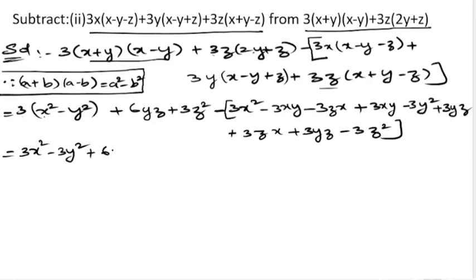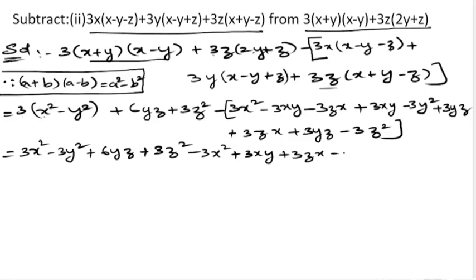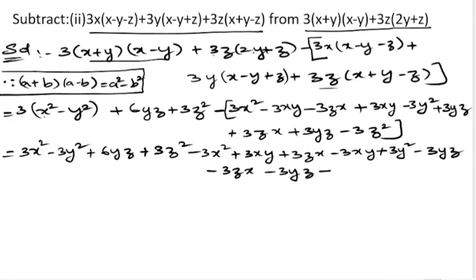Now we open the square bracket. 3 into x² is 3x², minus 3y², plus 6yz, plus 3z². Opening the square bracket: minus into plus is minus 3x², minus into minus is plus 3xy, minus 3zx, minus 3yz. Plus into minus gives minus 3zx, minus 3yz. Minus into minus is plus 3z².